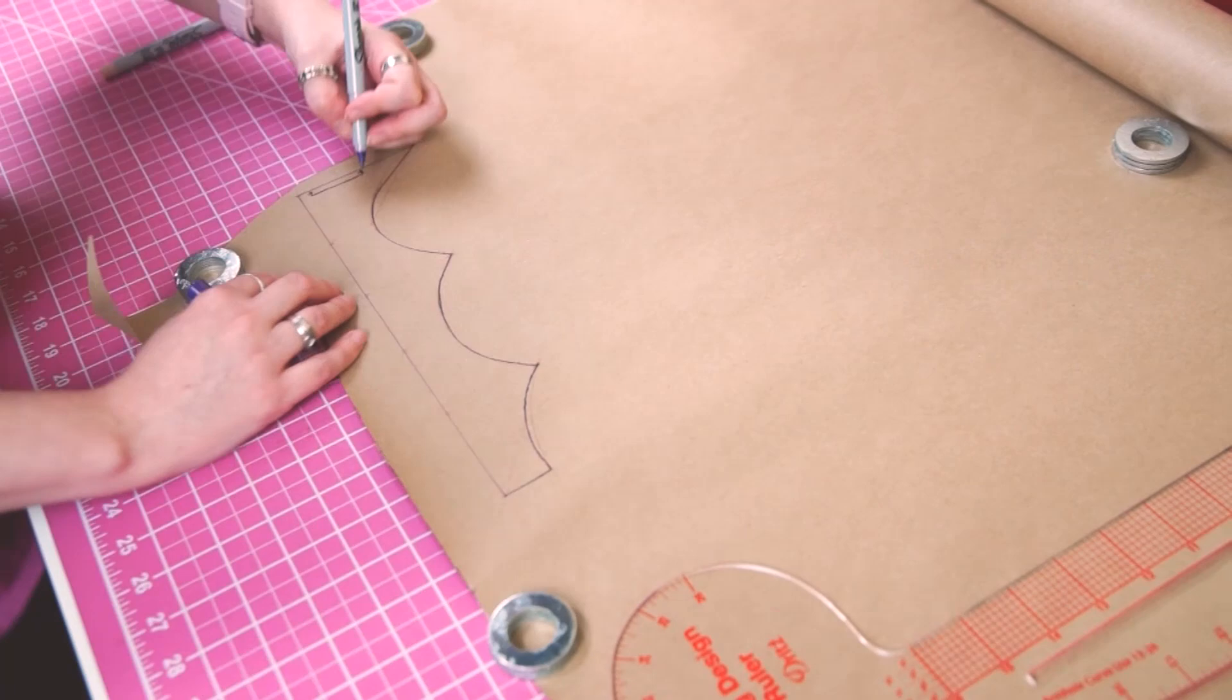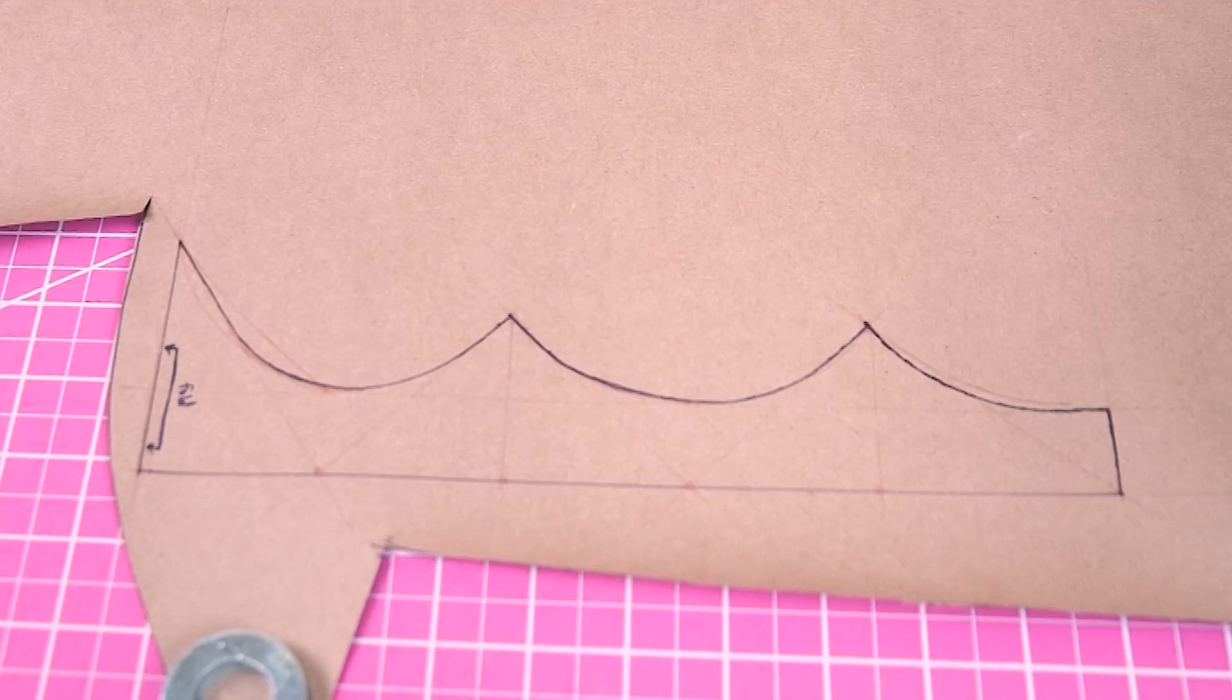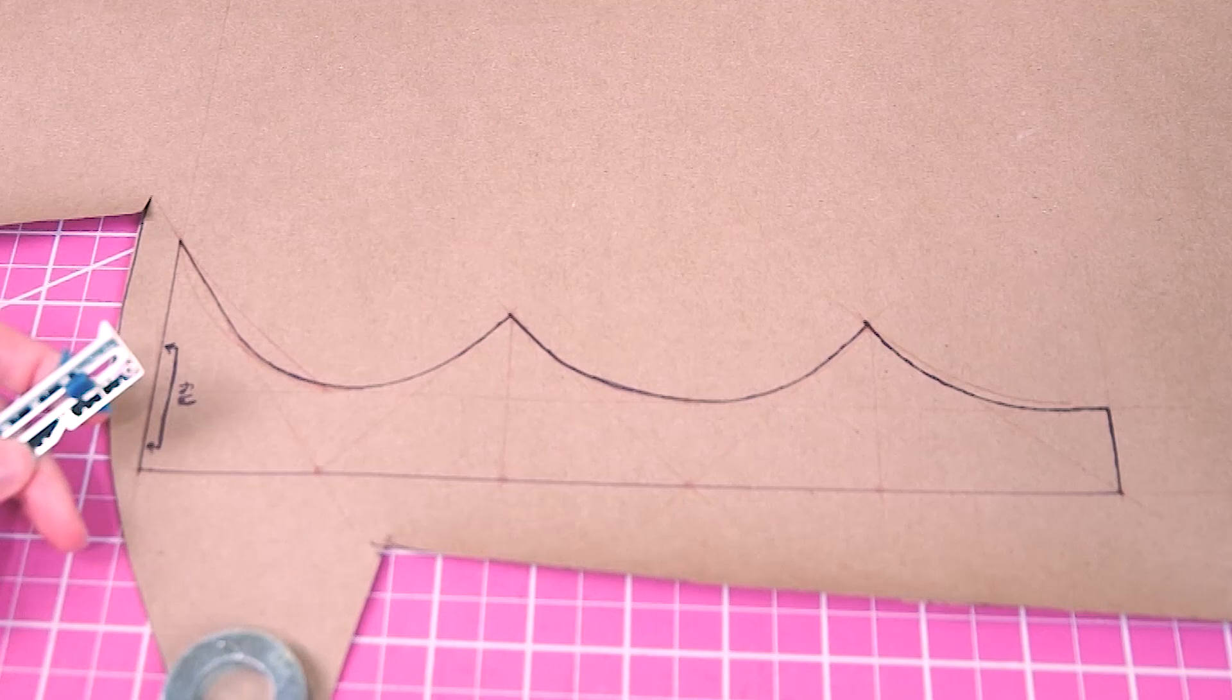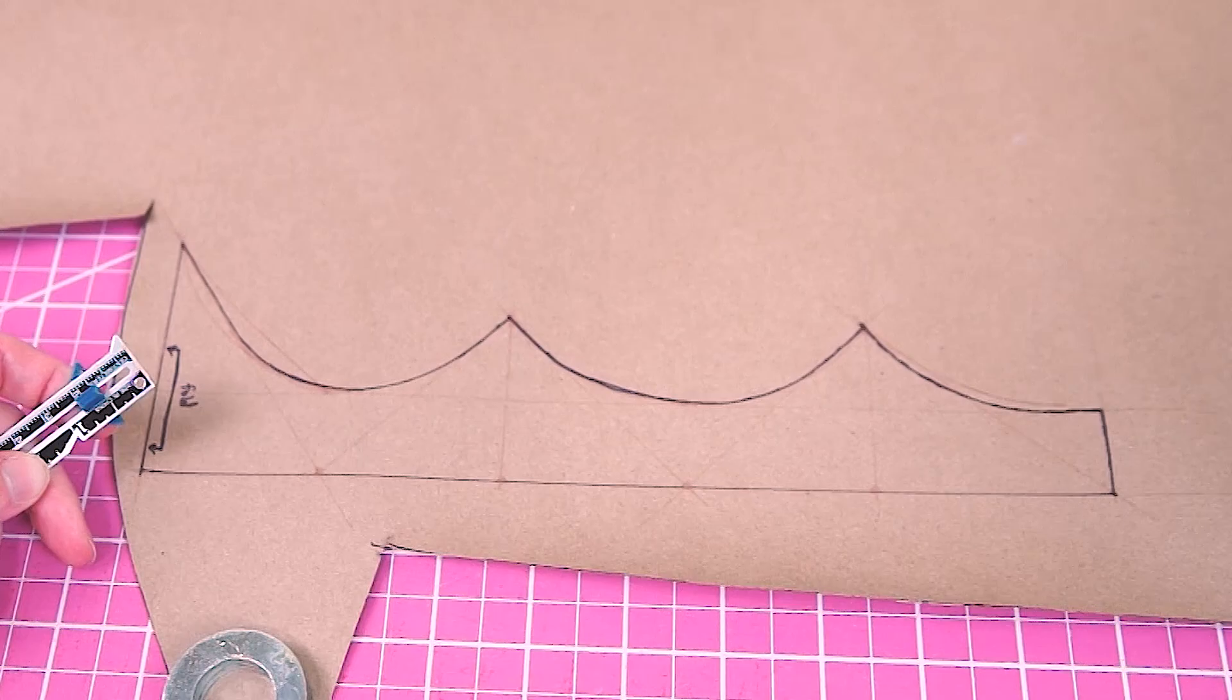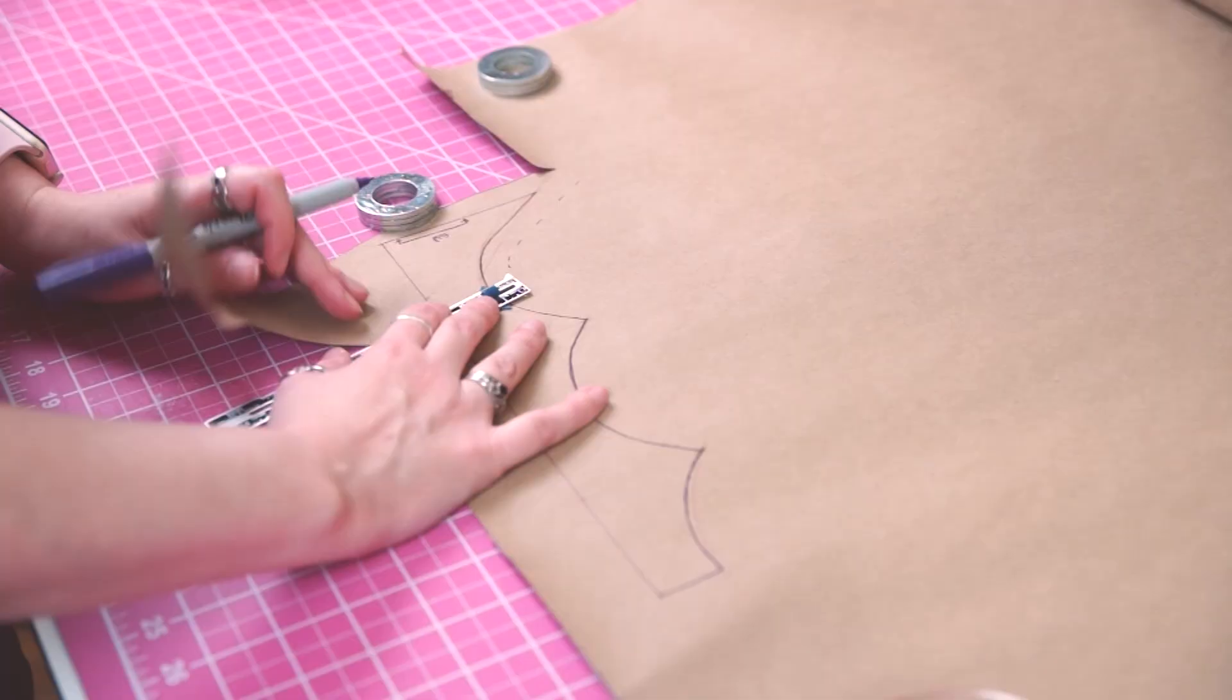I've marked where the middle of the crown is to remind myself to cut the pattern out on a fold. So this is what my crown looks like so far. You should cut this out and trace it again on some more paper before moving on to the next step because you will need two versions of this pattern, and I'll explain why later.